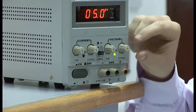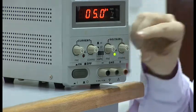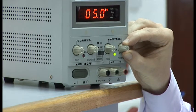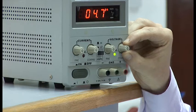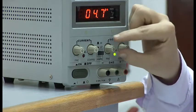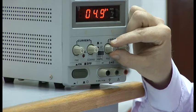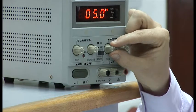After this is done, we can set any voltage that we would like on the screen with our course knob to be around the correct voltage and then with the fine knob, we would adjust exactly, in this case, up to 5 volts.